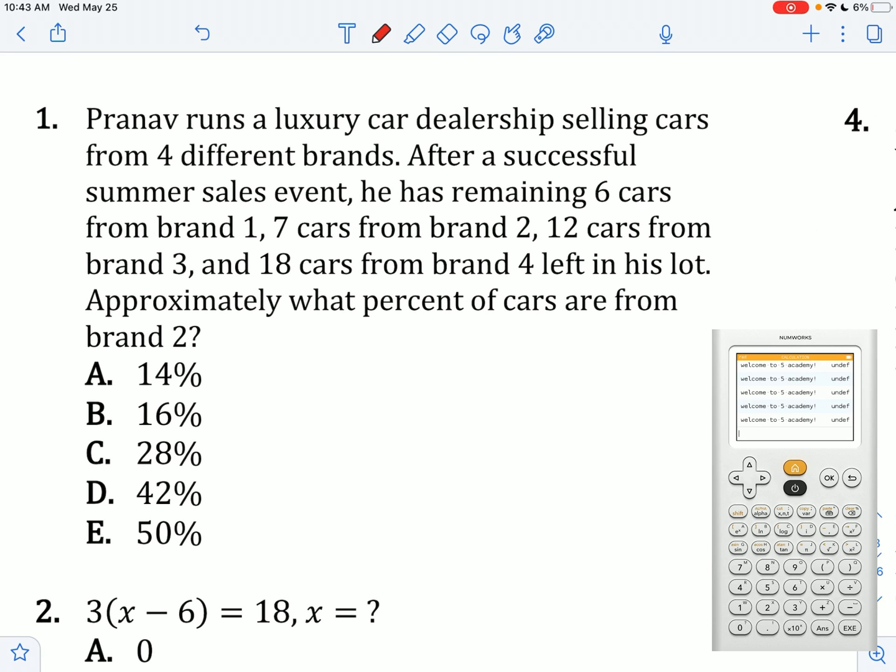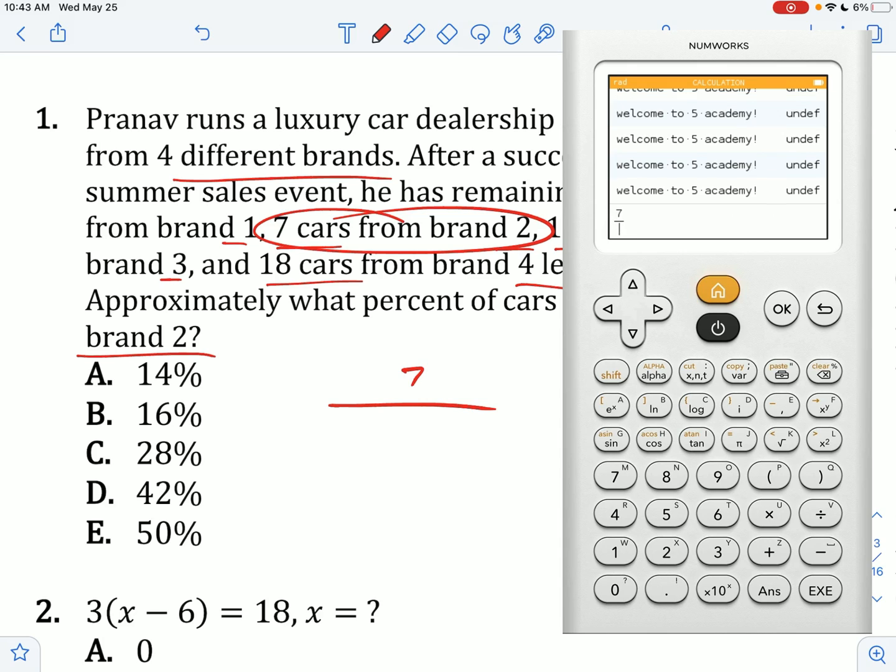Pranav runs a luxury car dealership selling cars from four different brands. After a successful summer event, he has six cars from brand one, seven from brand two, 12 from brand three, and 18 from brand four left in his slot. Approximately what percent of cars are from brand two? So seven from brand two, divide that by the total number of cars. On my calculator: seven divided by 6 plus 7 plus 12 plus 18. That gives us seven out of 43, which is 16%.